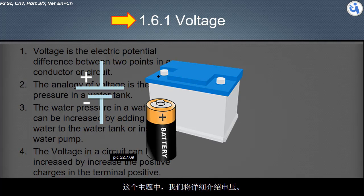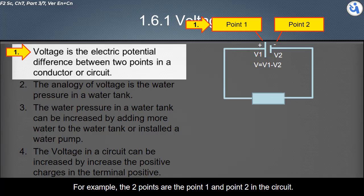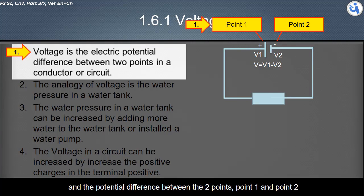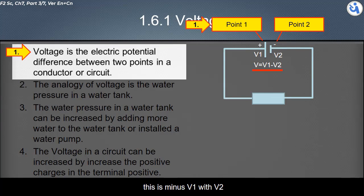Voltage is the electric potential difference between two points in a conductor or circuit. For example, the two points are point 1 and point 2 in the circuit. The potential difference between the two points can be gained by minus the potential in point 1 with the potential in point 2. This is V1 minus V2.